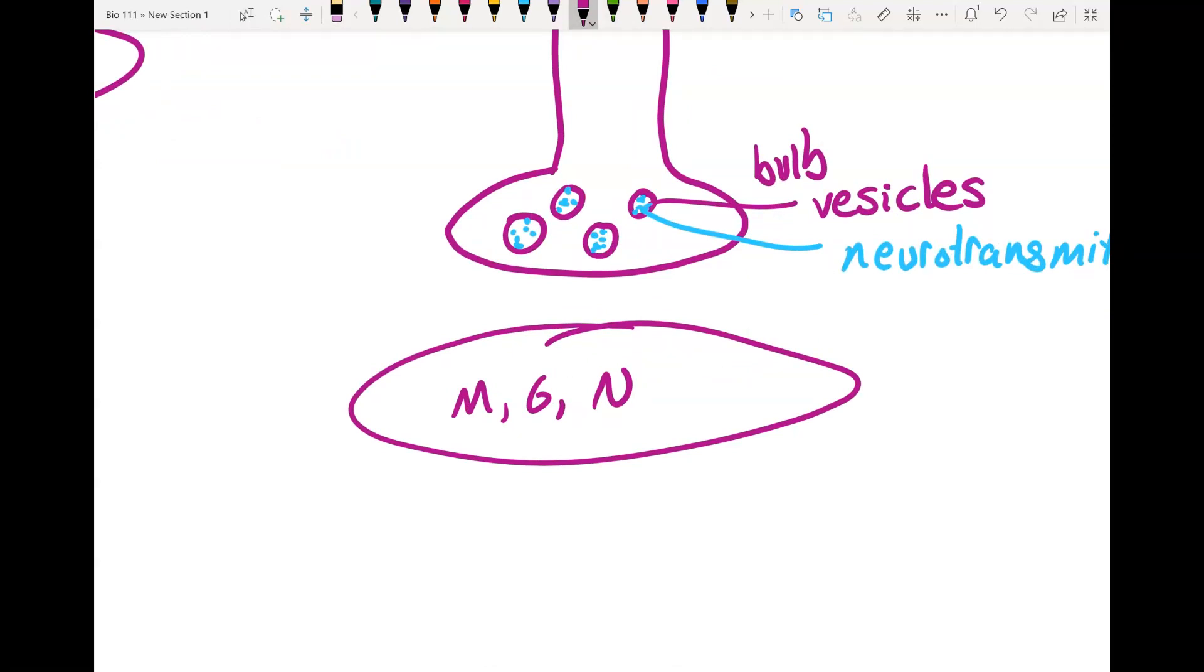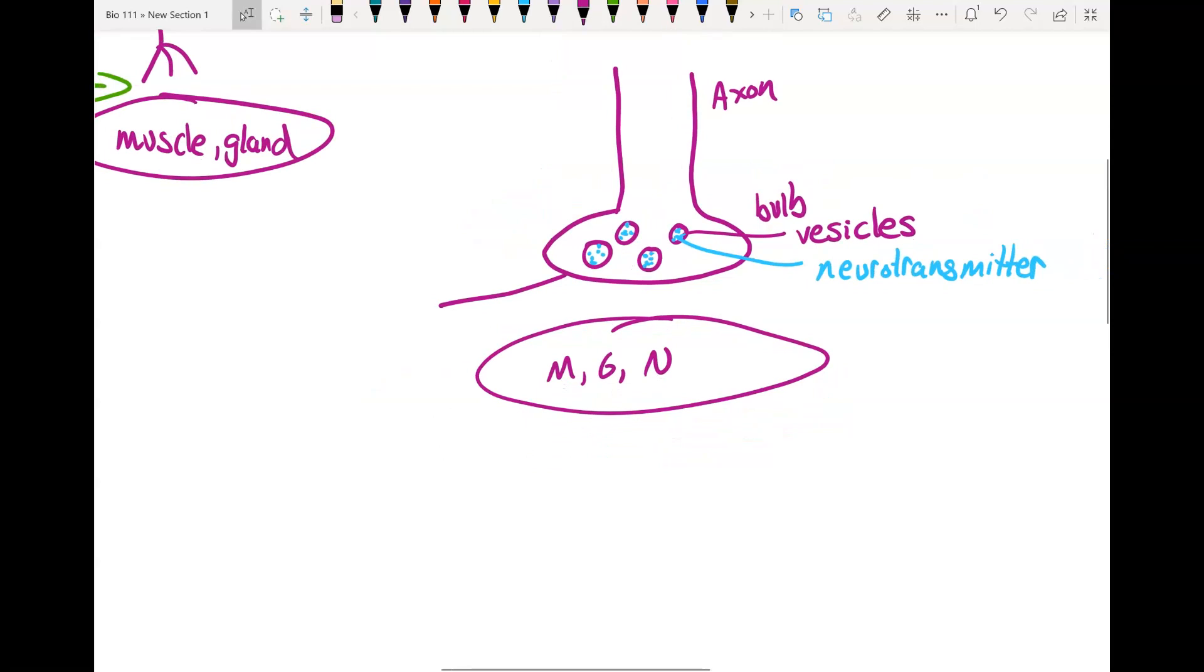This area on the neuron is called the presynaptic membrane. And this area on the next cell, whether it's a muscle, a gland, or another neuron, is the postsynaptic membrane. So pre just means before and post means after. Because remember this space in between them is the synapse. So you have before the synapse. You have after the synapse.